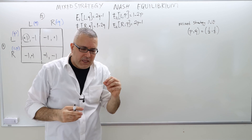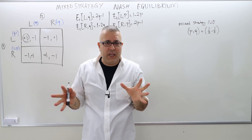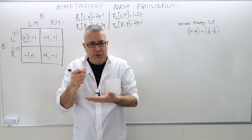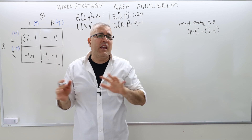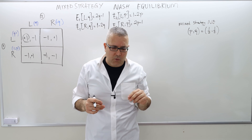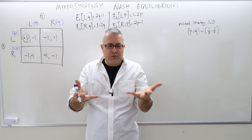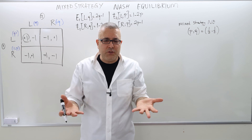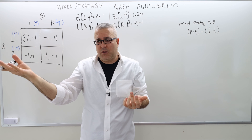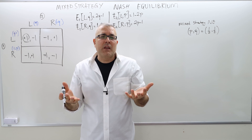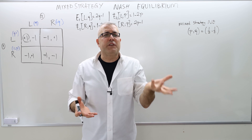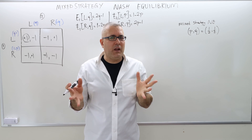These two players are playing this game simultaneously, meaning player one chooses some P and player two chooses some Q. P is some number between 0 and 1, and Q is anything between 0 and 1. Then the game is over and those choices are revealed. The moderator says player one has chosen P equals something, player two has chosen Q equals something. The question is: is there anyone who regrets their choice? So we're looking for a regret-free outcome, and hence the Nash equilibrium.